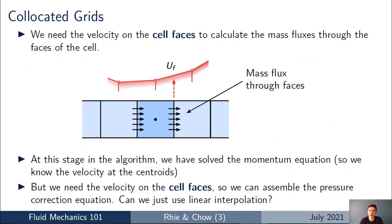Because we're using a co-located grid, the standard procedure in a SIMPLE or PISO-type algorithm is to solve the momentum equations first — the equations for u, v, and w — giving us velocity values at all cell centroids. The next stage is to assemble and solve an equation for the pressure correction, and to do that we need to calculate the mass flux through the faces of the cells. The mass flux is density times velocity times area, so we need to know the velocity on the faces, having solved for velocity at the centroids.